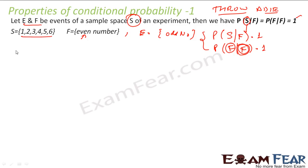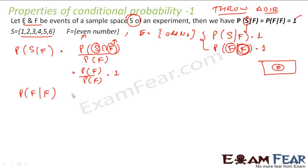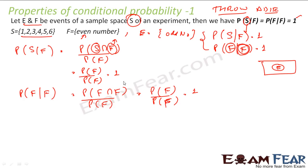To derive this, probability of S given F is nothing but the intersection of S with F divided by probability of F. When you intersect the sample space with some event F, you get F only. So this becomes probability of F by probability of F, which is 1. The second part: probability of F given F is nothing but probability of F intersection F by probability of F. F intersection F is F only, so that is probability of F by probability of F, which is 1. In both cases you get 1.